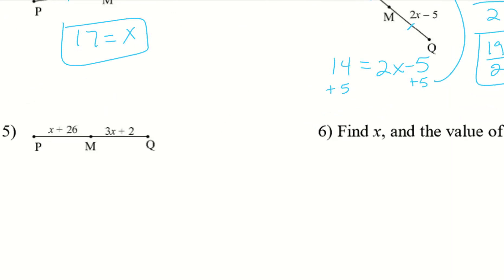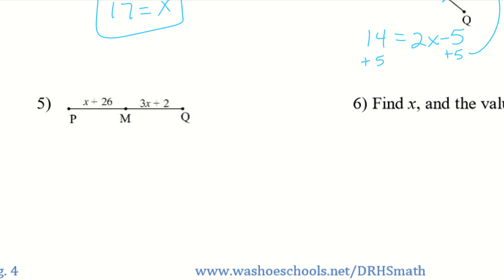Okay, let's try it again with number 5. So M, once again, is a mid-segment, which means this is congruent to that. So X plus 26 equals 3X plus 2. So I'll go ahead and combine my like terms. So I now have 24 equals 2X, which means X has to equal 12.